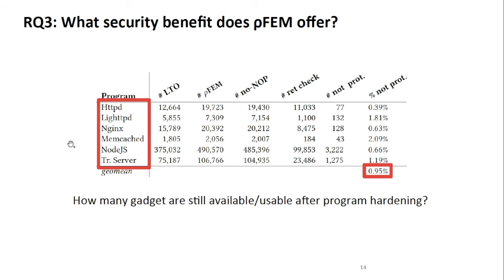Next, we asked about the security benefit. We analyzed the programs using an open-source tool for counting how many ROP gadgets are inside them, doing this both before and after hardening with our application. After hardening, we observed that in geo-mean less than 1% of the gadgets are still available and usable in the protected application. This makes the attacker's task very hard and the likelihood of performing a successful attack very low.